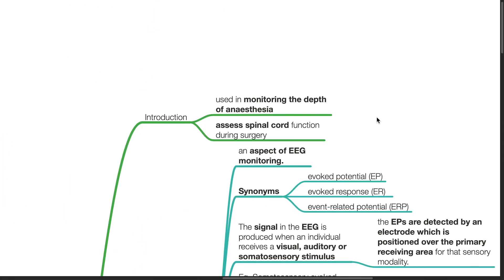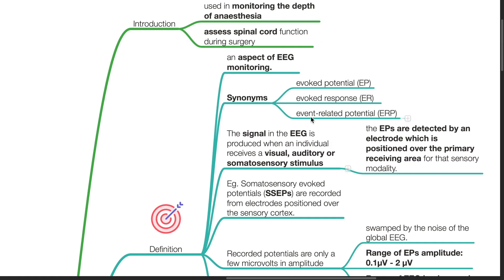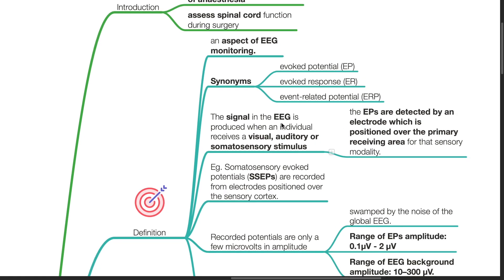Evoked potentials are used in monitoring the depth of anesthesia and assessing spinal cord function during spinal surgery. It is an aspect of EEG monitoring. Synonyms include evoked response and event-related potential. The signal in the EEG is produced when an individual receives a visual, auditory, or somatosensory stimulus.